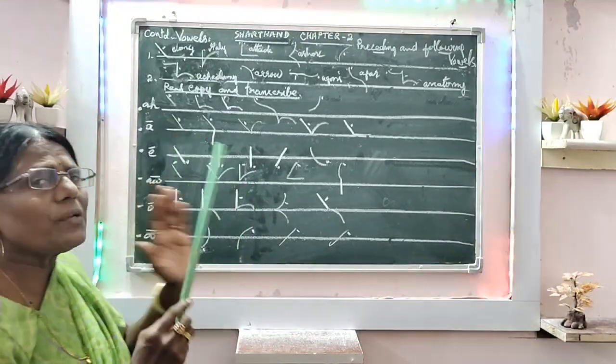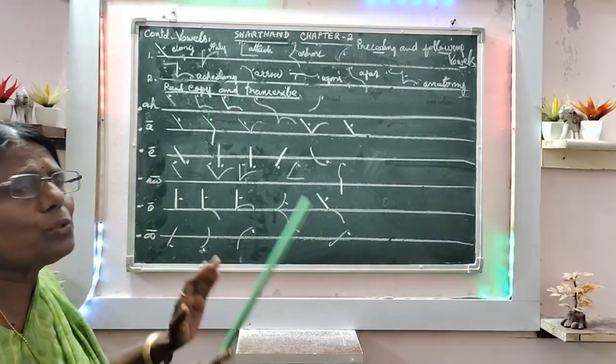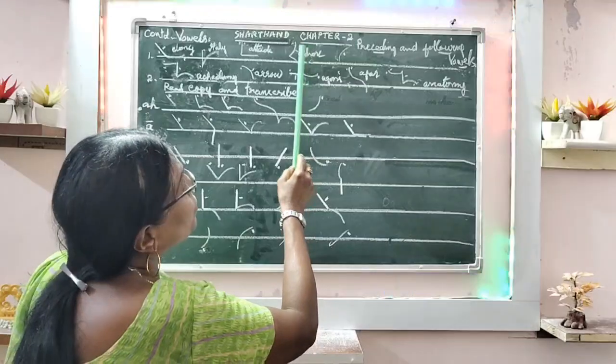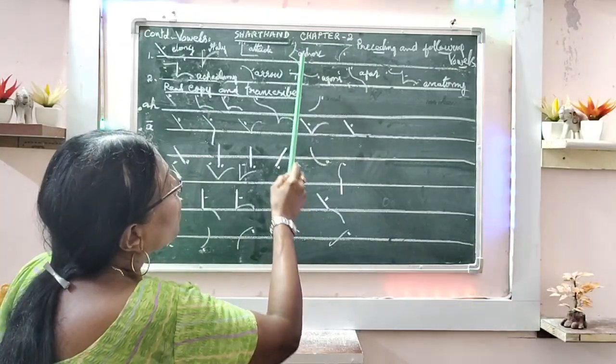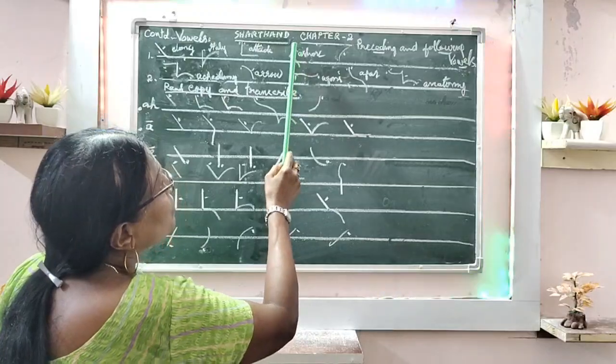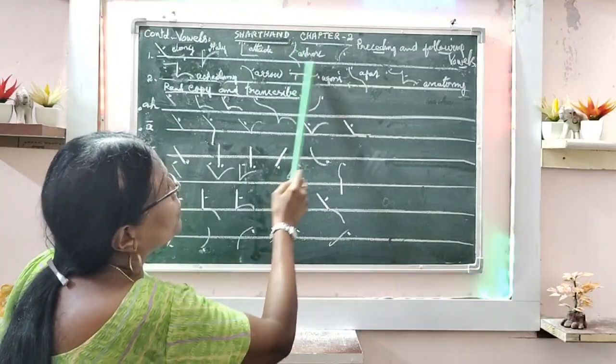Very understandingly if you read, it is very easy for you to place the vowels. And here, Ashur. A, Ish, R. Ashur.